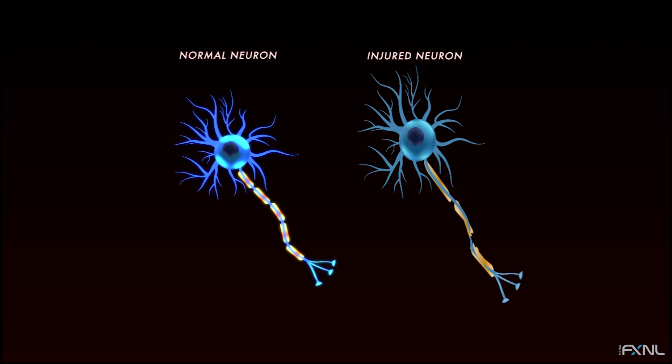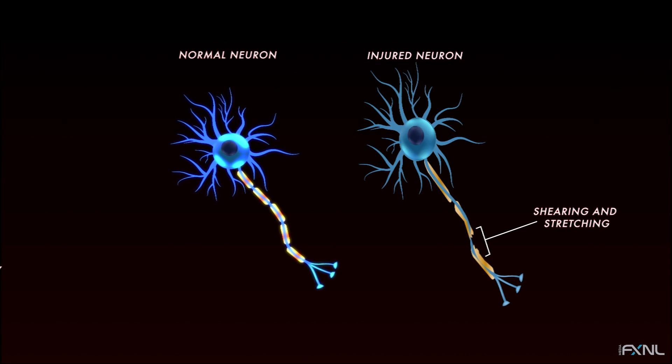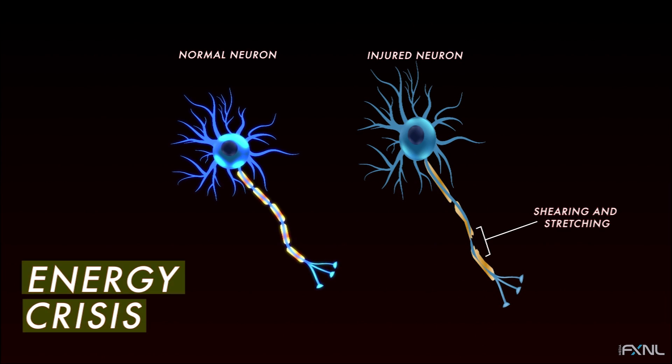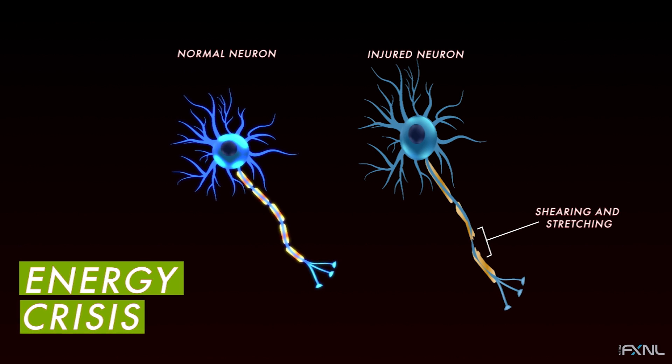The same is true in the brain. A concussion is a bad storm that disrupts many neurons, causes stretching and shearing of the axons, and leads to an overall energy crisis within the brain.